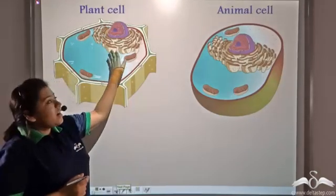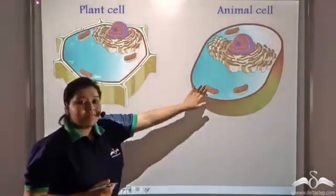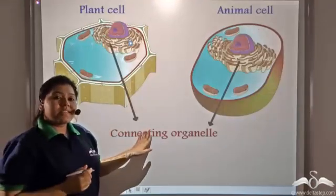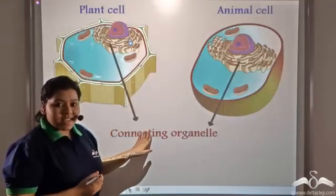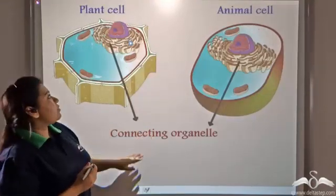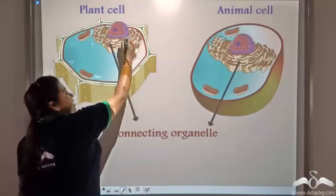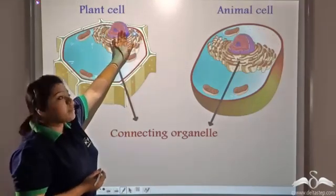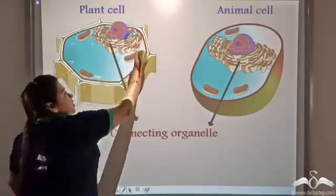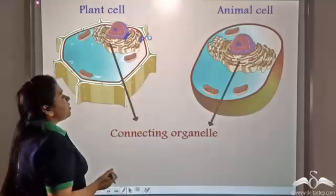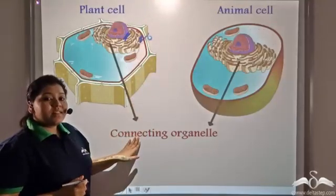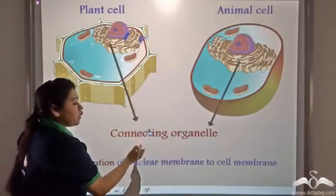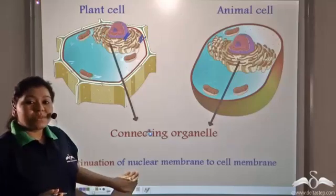Similarly, plant and animal cells have a connecting organelle present inside their cell. If you notice carefully, you will see that this connecting organelle stretches right from the nuclear membrane to the cellular membrane — it continues from the nuclear membrane all the way to the cellular membrane.